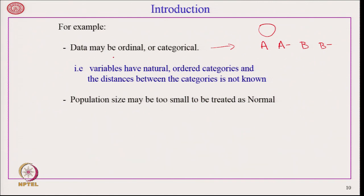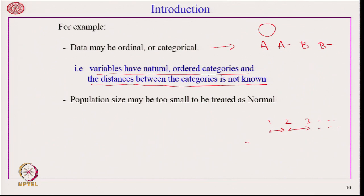Variables have natural ordered categories but the distances between the categories are not known. Suppose the first student scored 80, the second 75, and the third 65 — we give them ranks 1, 2, 3. But if the first is 80, second is 78, and third is 75, they again get the same ranks 1, 2, 3. Therefore, when I have data in this ordinal form, I lose a lot of information. Also, another problem is that the population size may be too small to be treated as normal.